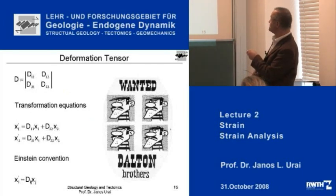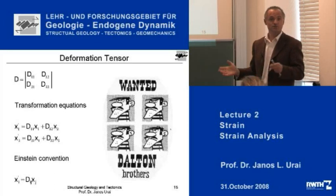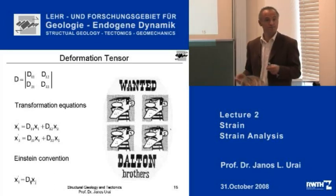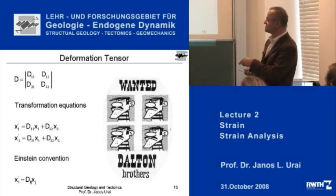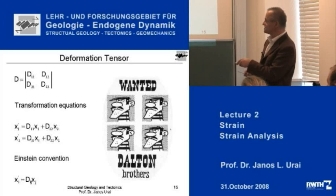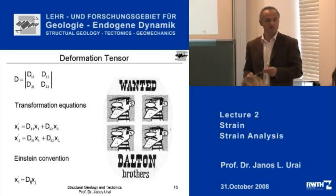We have these four D's — they are just four numbers. And this is the transformation equation. If you want to use the Einstein convention, then you can write it as Dij times Xj. This is the shorthand notation of this transformation.